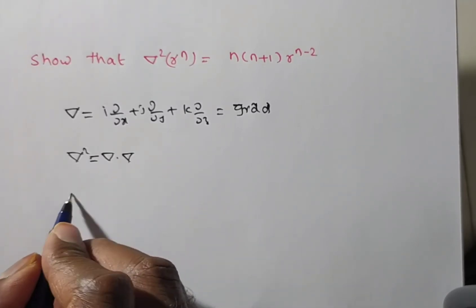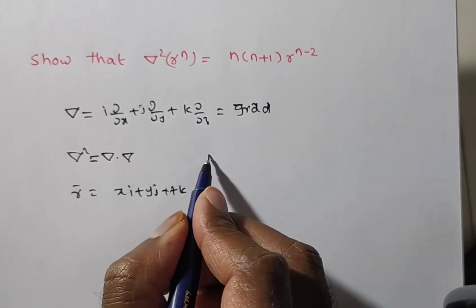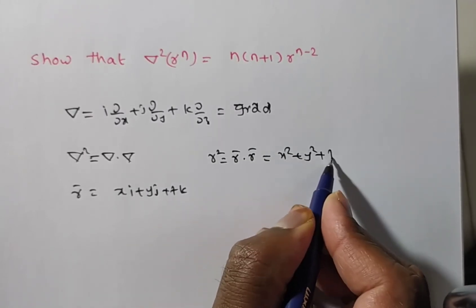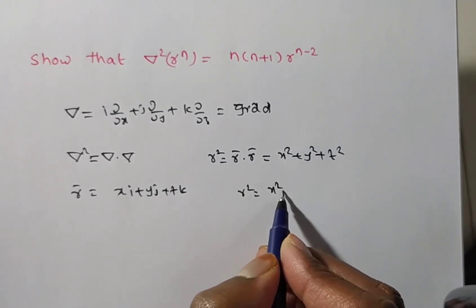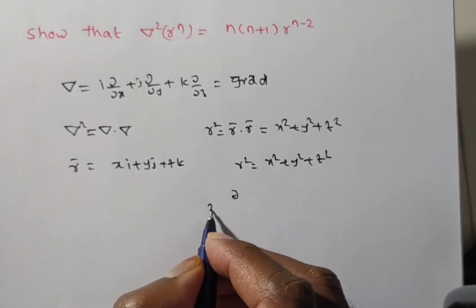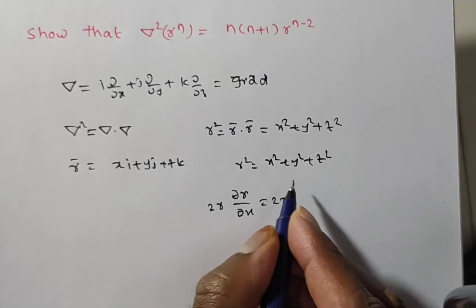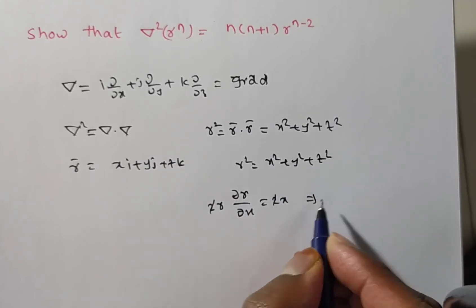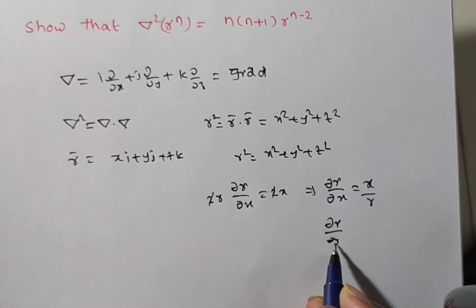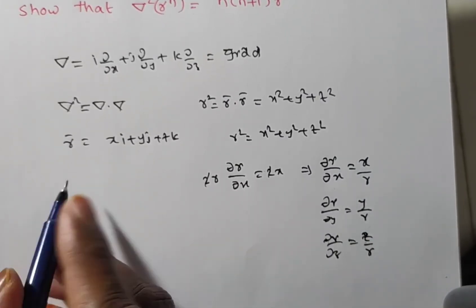r̄ = xi + yj + zk, and r² = r̄·r̄ = x² + y² + z². Differentiating r² = x² + y² + z² partially with respect to x: 2r·(∂r/∂x) = 2x, so ∂r/∂x = x/r. Similarly, ∂r/∂y = y/r and ∂r/∂z = z/r.